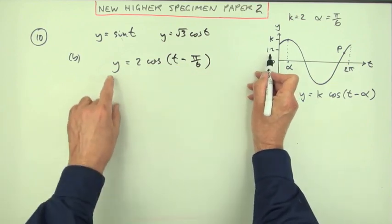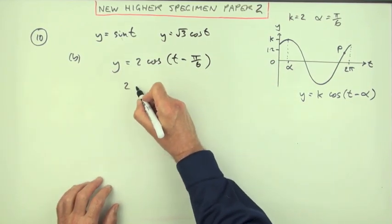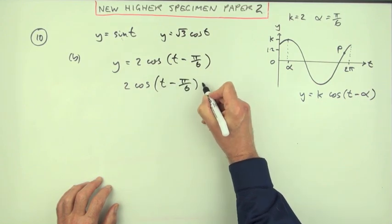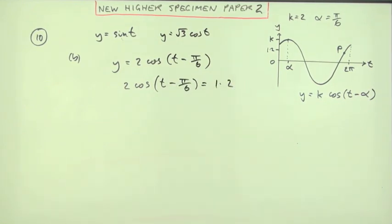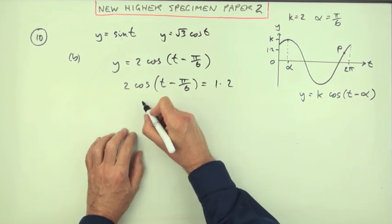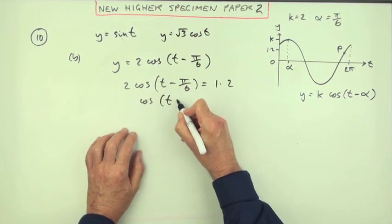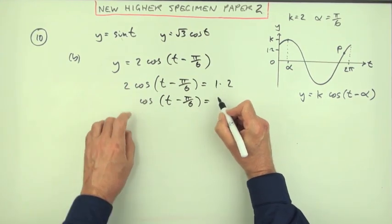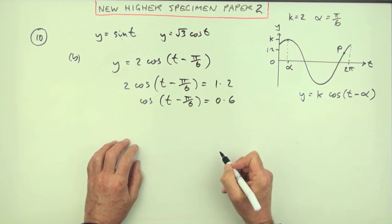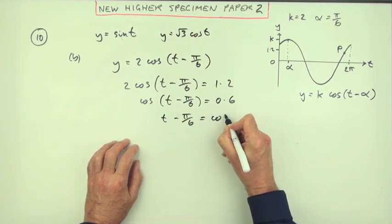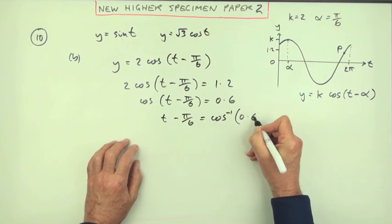That equation was y equals 2 cos(t - pi upon 6). So what's t if y is 1.2? 2 cos(t - pi upon 6) equals 1.2. So how can you find t? Just get rid of all the bits and pieces. Get rid of that 2.